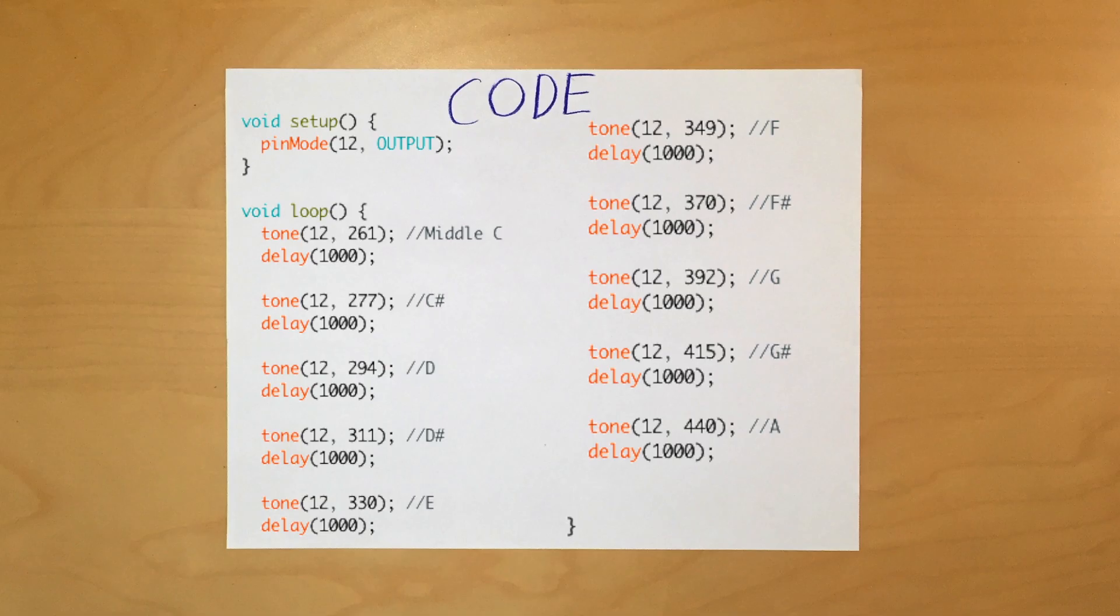First, we identify pin 12, or whatever pin you're using, as output. Then, in the loop section, begin with the tone command. Define the pin you're using and set the frequency to 261 Hz, or middle C. After that, make a delay for however long you want each note to play.